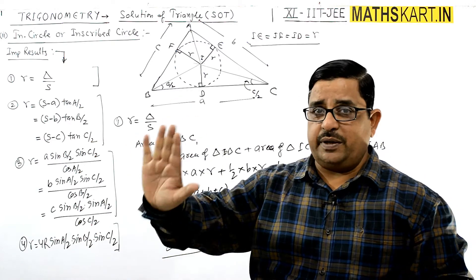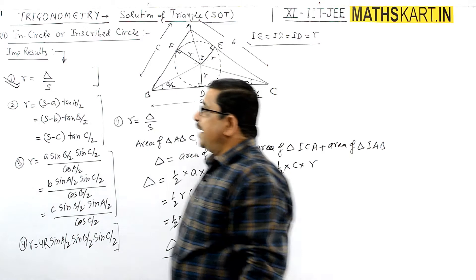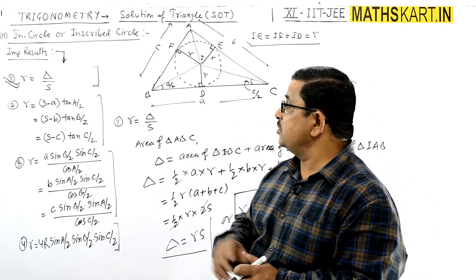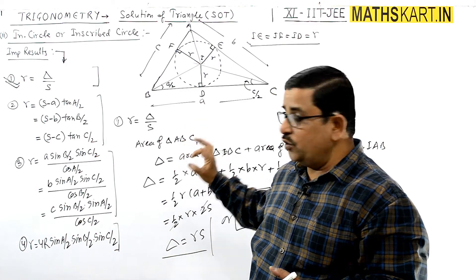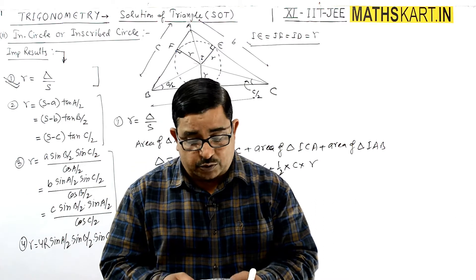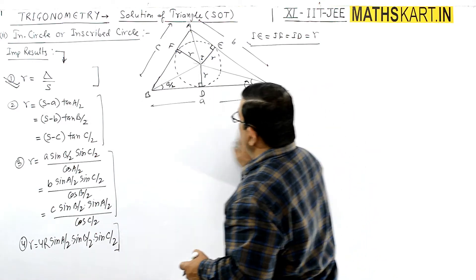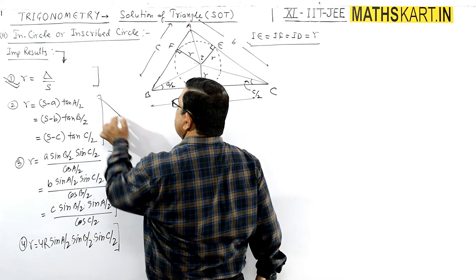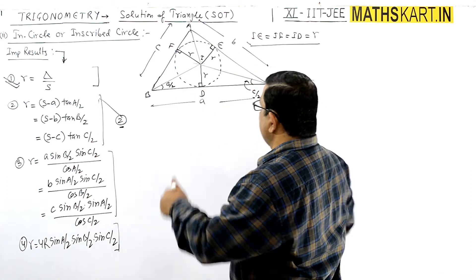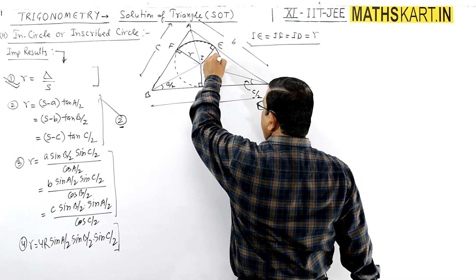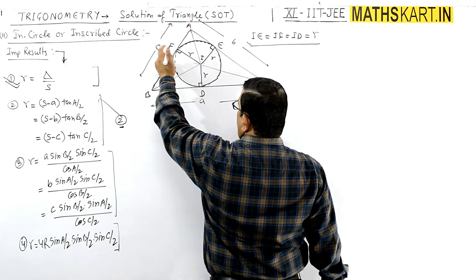So small r equals delta by s. The second set of results gives small r equals (s-a) tan(A/2), (s-b) tan(B/2), and (s-c) tan(C/2). For these, we use the fact that from vertex B, the segments BD and BF are two tangents drawn to the incircle.